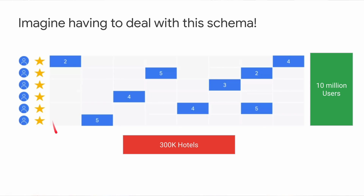Let's take a simple example of recommending hotels to users. In order to recommend hotels to users, you definitely need two minimum things: hotels and users. So let's assume we have a dataset where we have all the hotels — around 300,000 hotels and 10 million users. All the hotels are stored in different columns and all the users are stored in rows. Each cell contains the score that a user has given if they visited that hotel — five means they love it, one means they hate it.